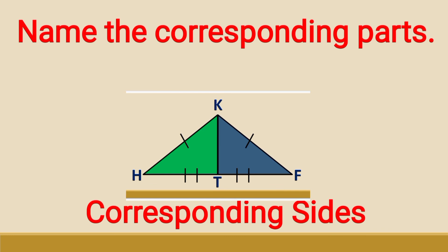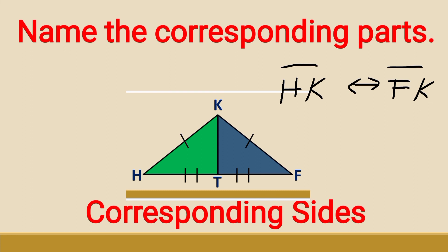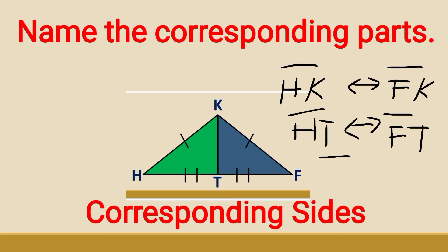Starting with corresponding sides: side HK corresponds to side FK, side HT corresponds to side FT, and lastly, side KT corresponds to itself. We have now completed the naming of the different corresponding parts.